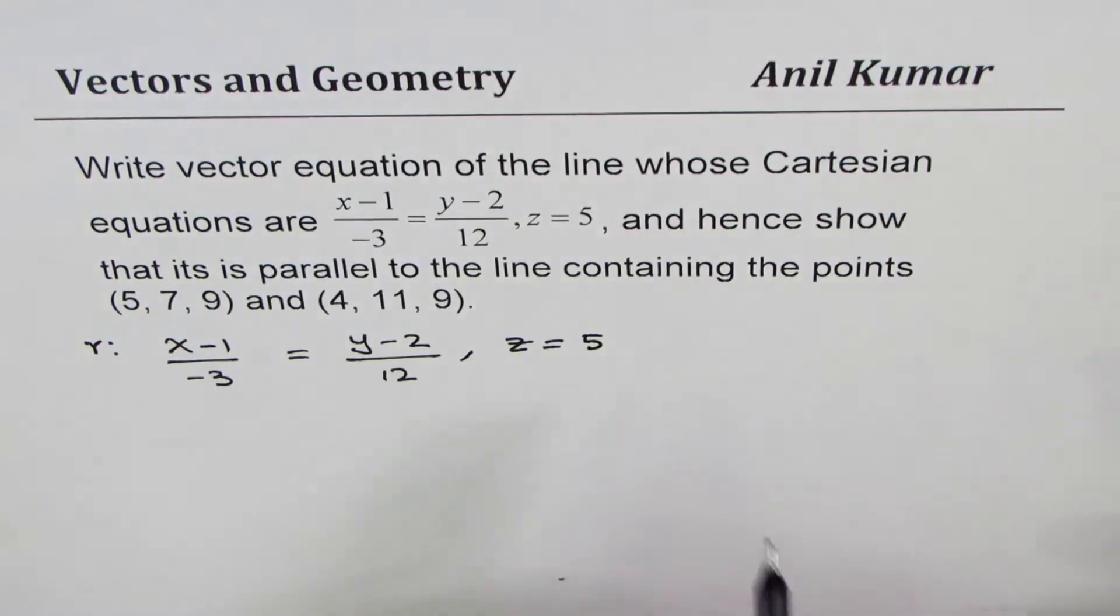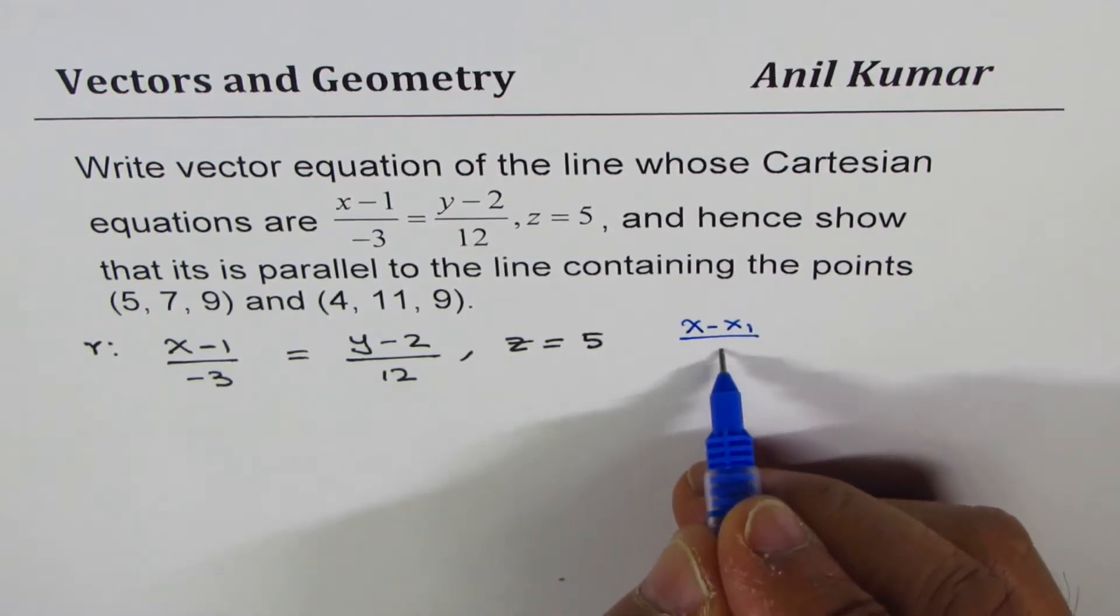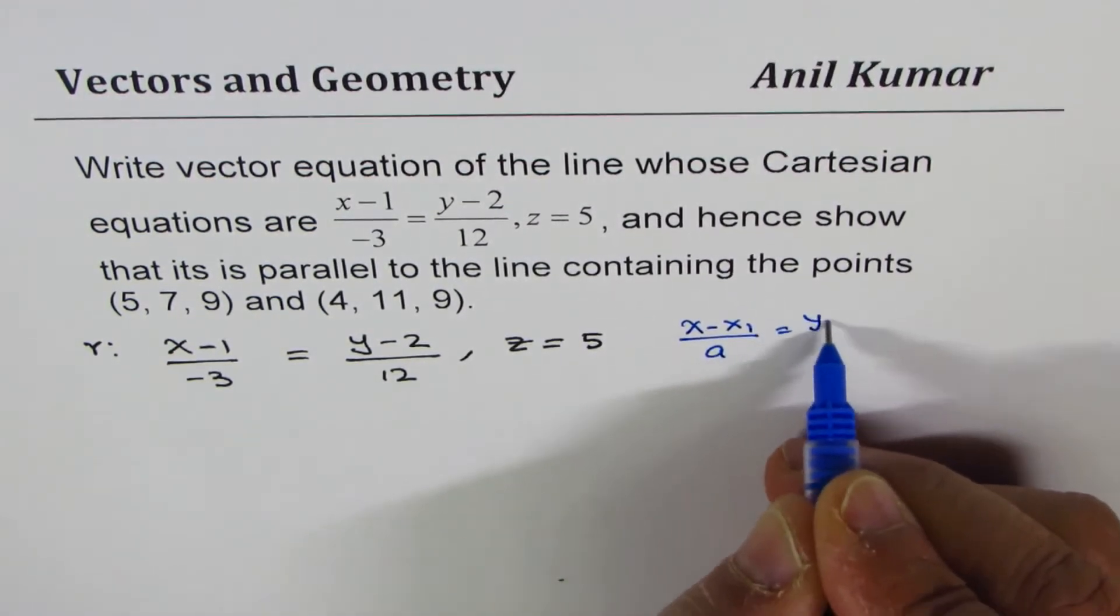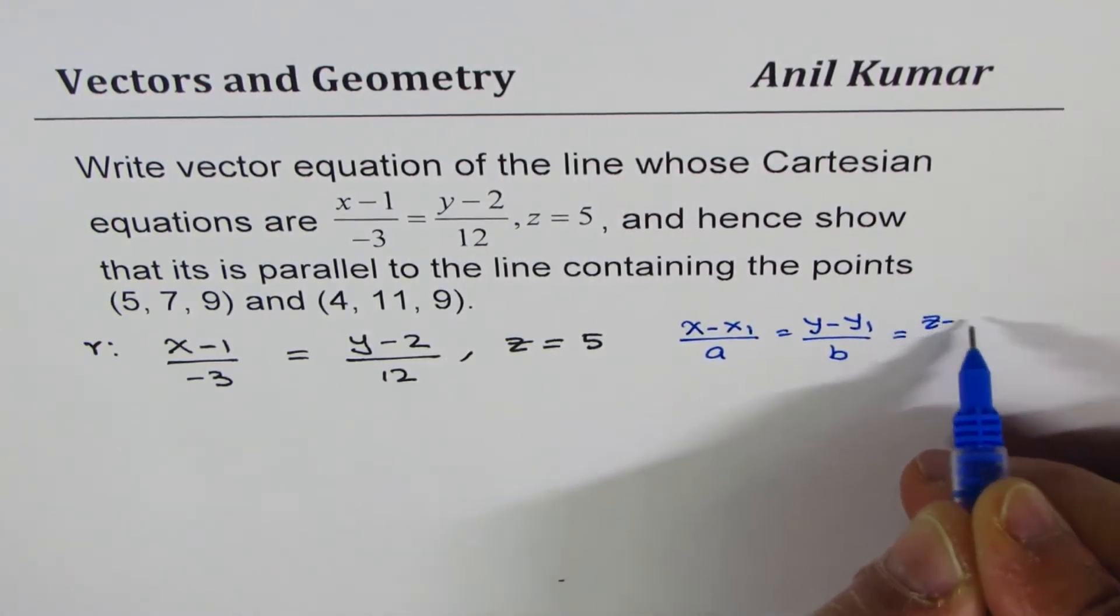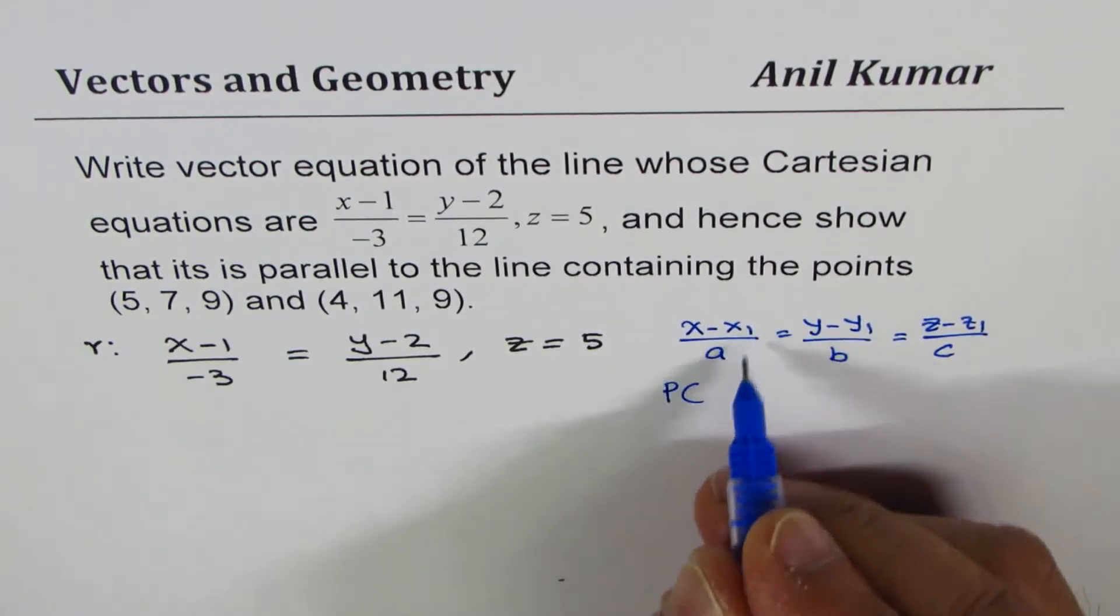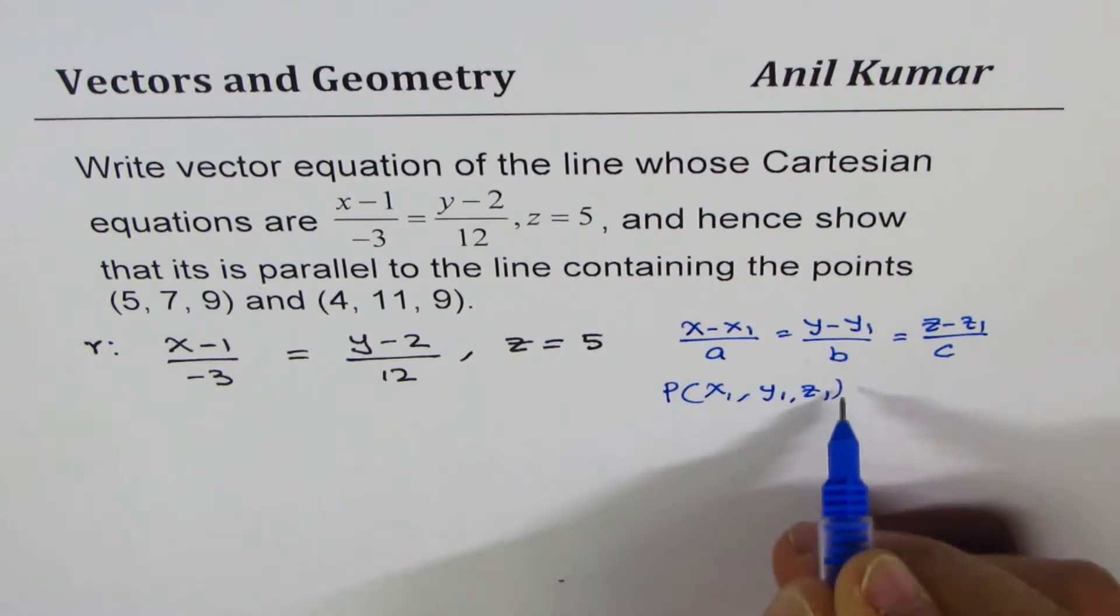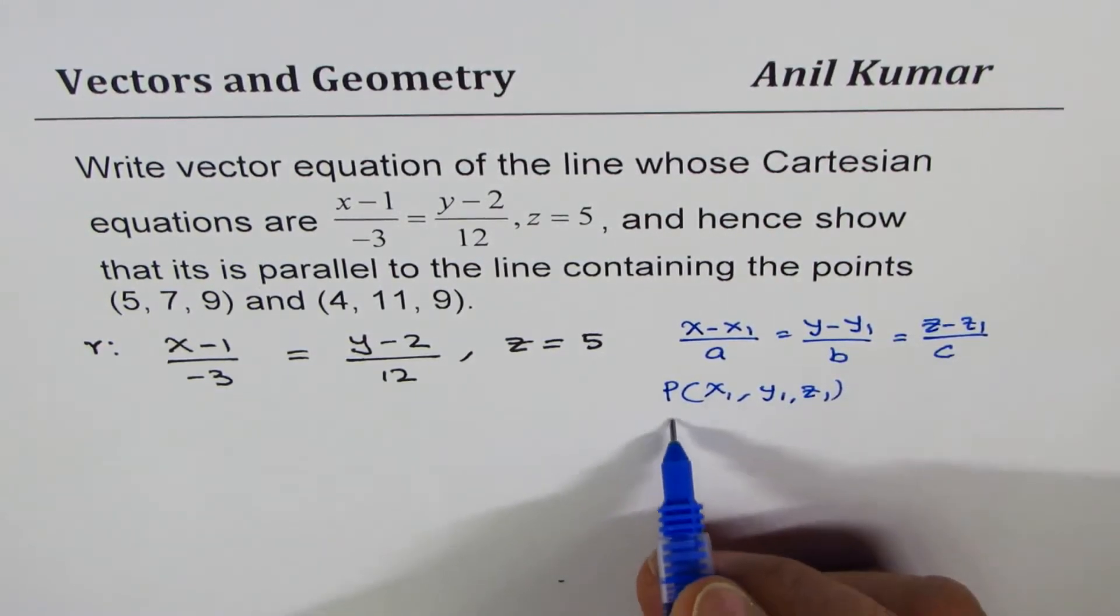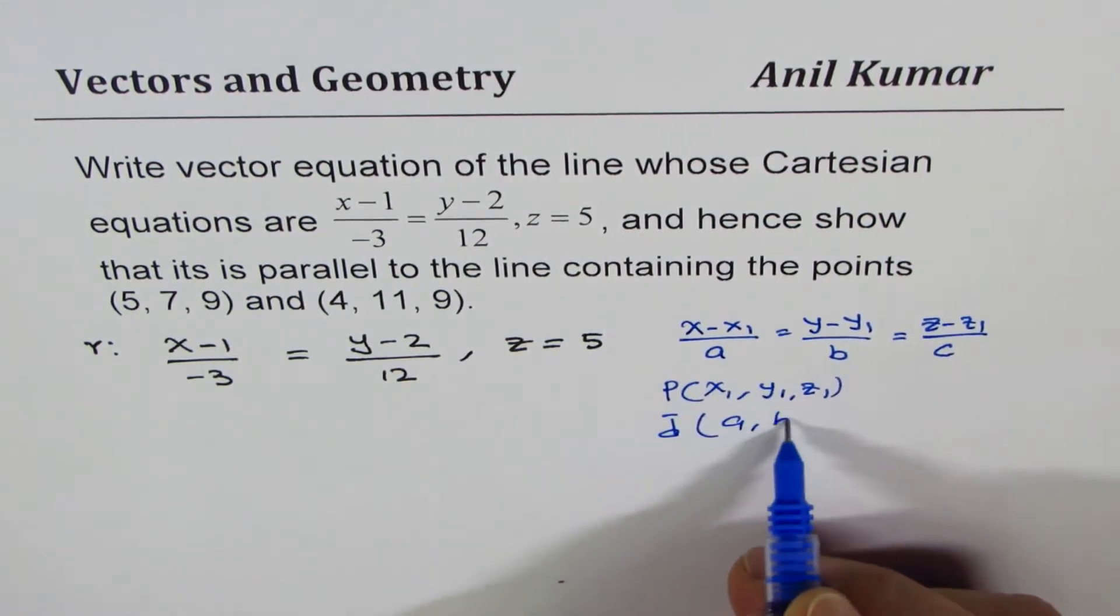Now, the standard form normally is kind of like this: x minus x1 over a equals to y minus y1 over b equals to z minus z1 over c, where a point P is defined by (x1, y1, z1). And the direction or slope, you can say, direction is given by (a, b, c).